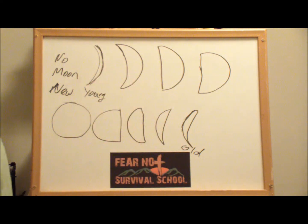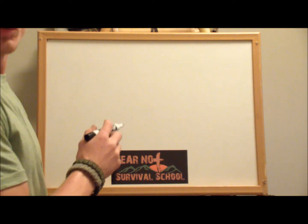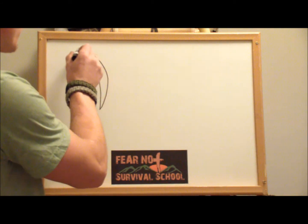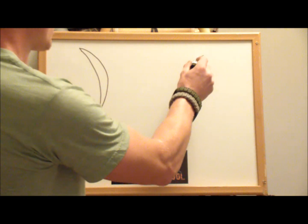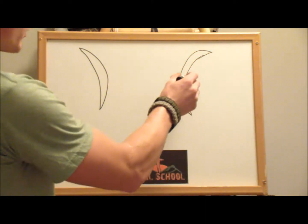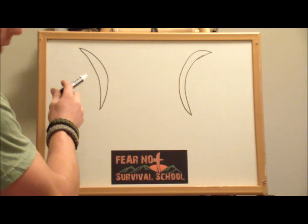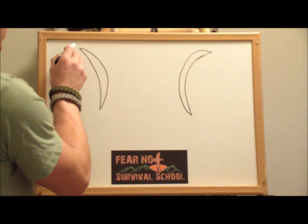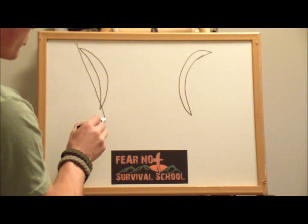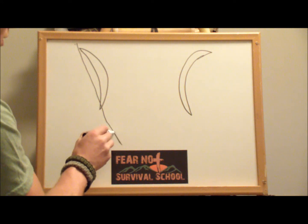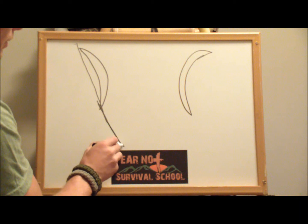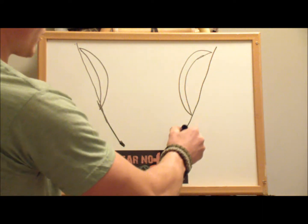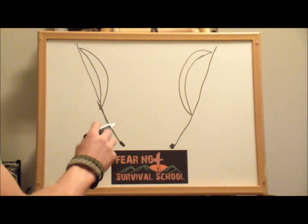Now let's look at what these crescents can do for us. Whether the moon is waxing or waning — increasing or decreasing — either one works just fine for this method. You take and draw a straight line from each point on the crescent. Obviously it will be imaginary in the night sky. That line is going to end up pointing you due south. Do the same thing with the other crescent — it's going to point you due south as well. Either one works.